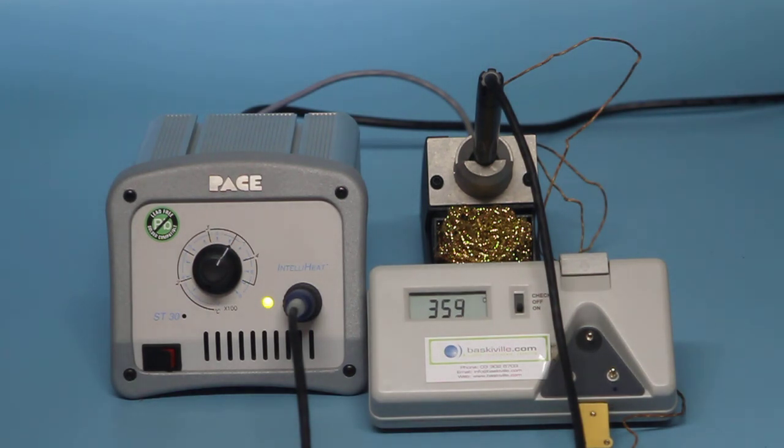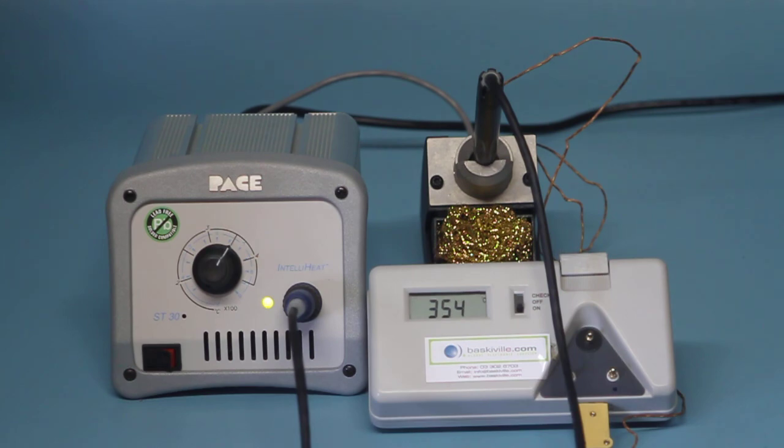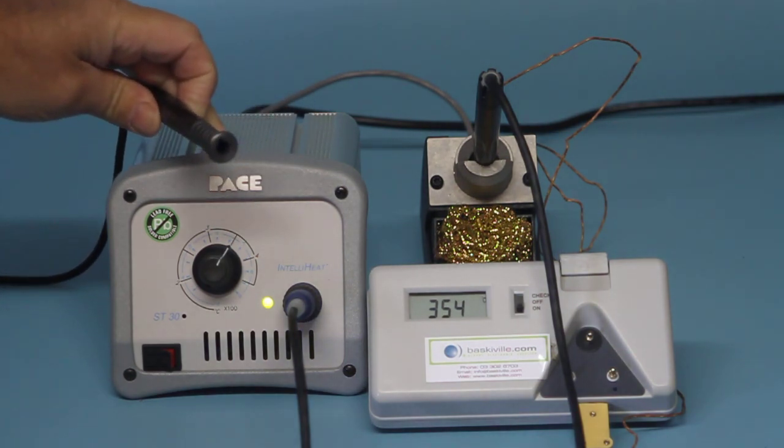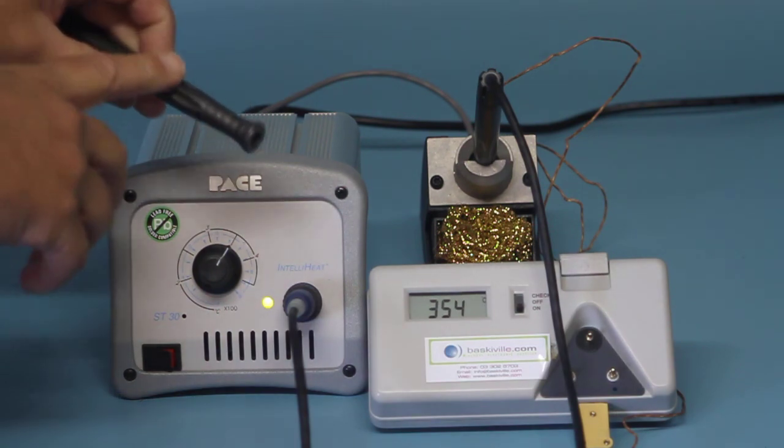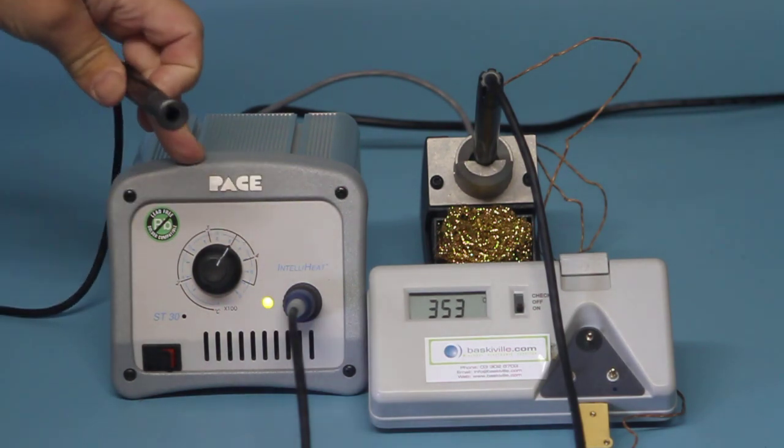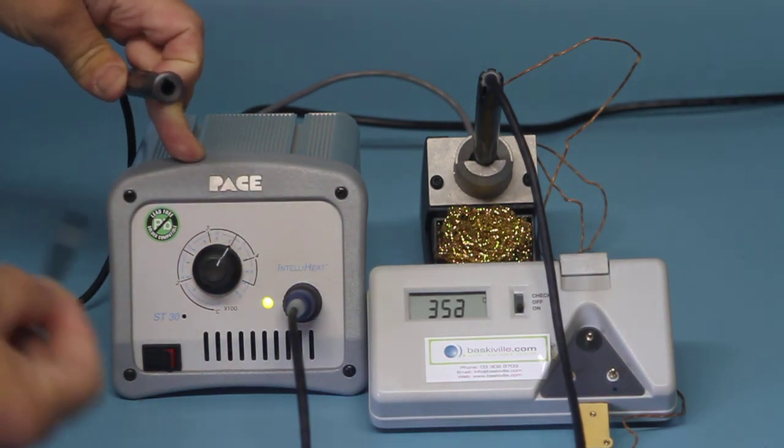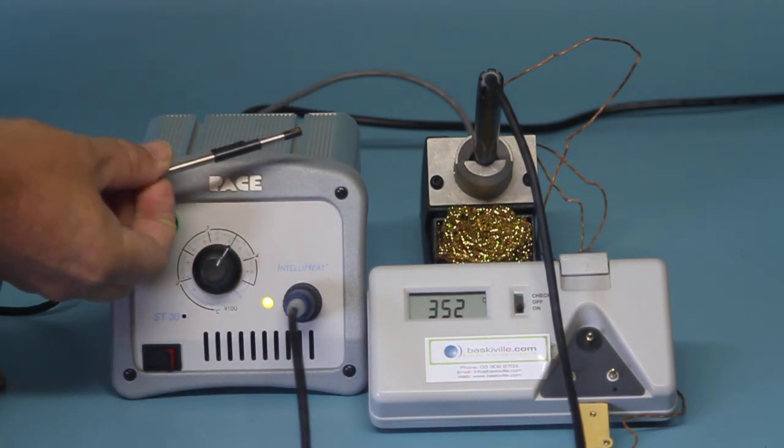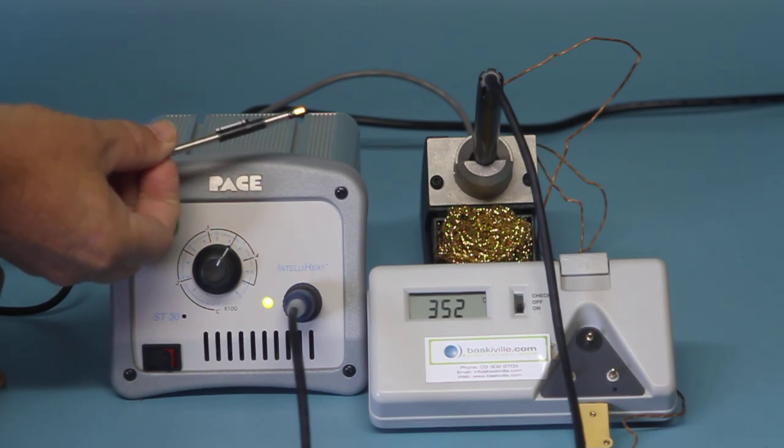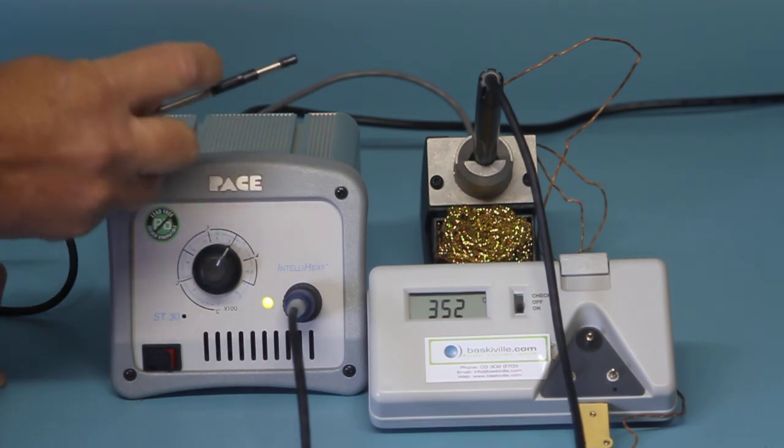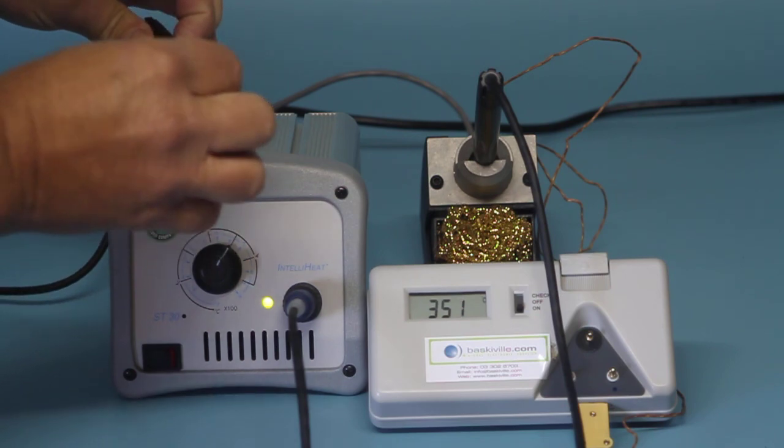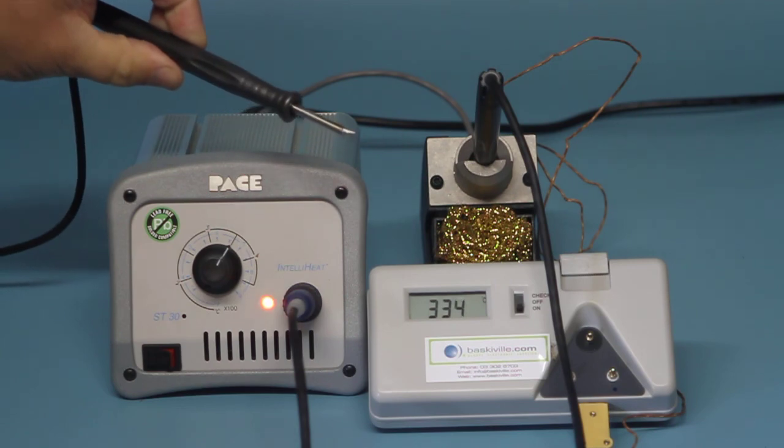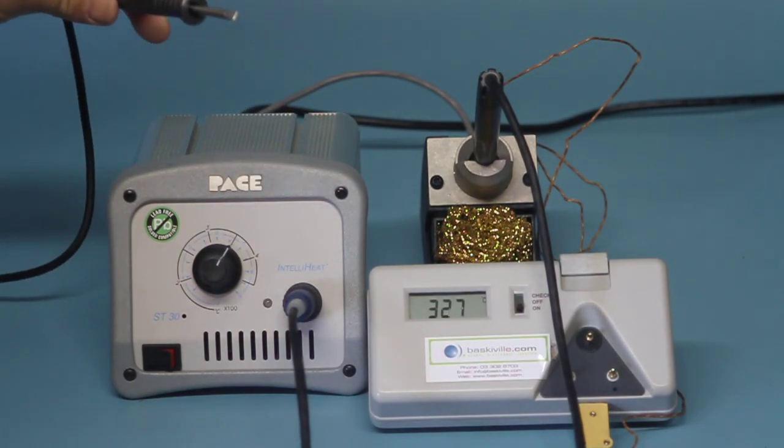Now while that's doing that, the other thing that I wanted to talk about was how easy it is to change the tips in a TD100 handpiece. Now they simply slide in. You can see the high spot on the side there, at the top, that locates in the groove and they simply slide in. And that tip is now ready to use.